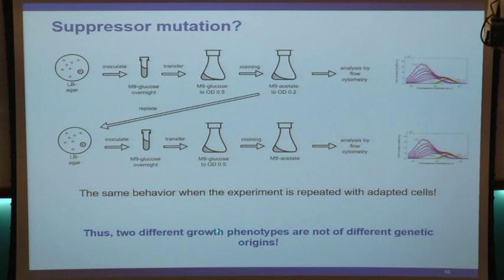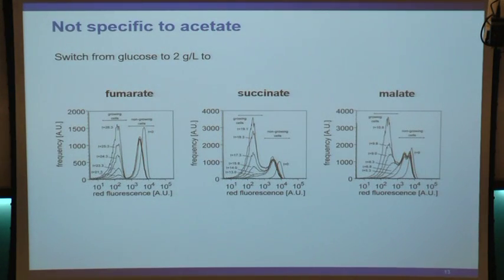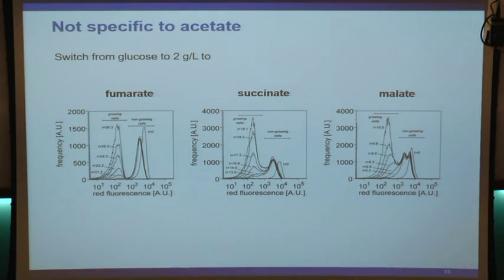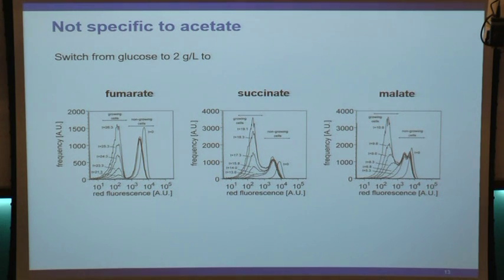Apparently the two phenotypes we see are not due to different genotypes. Another question: is this specific to the switch to acetate, or does it also happen when switching to other carbon sources? This data shows that when you switch cells from glucose to other carbon sources, we again get these two populations - it's not specific to acetate.